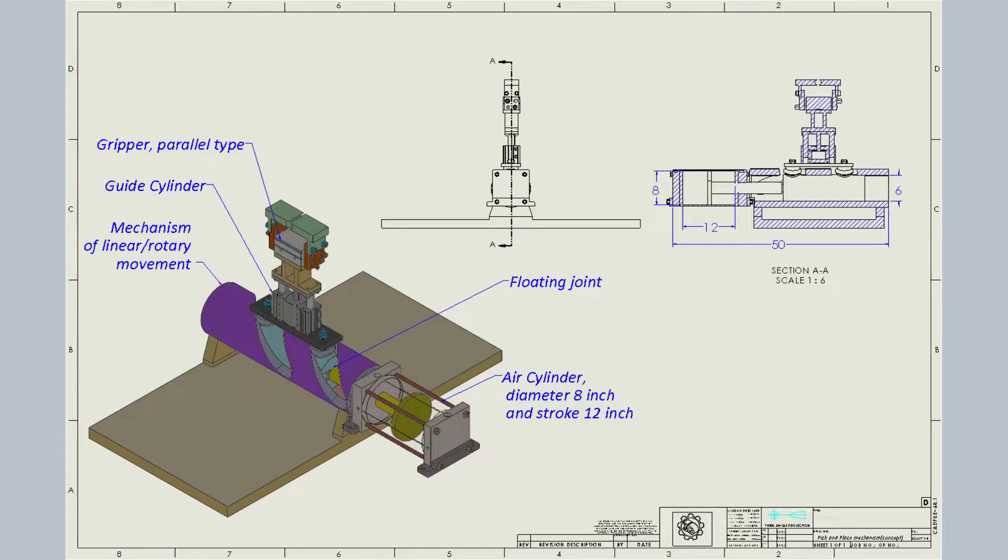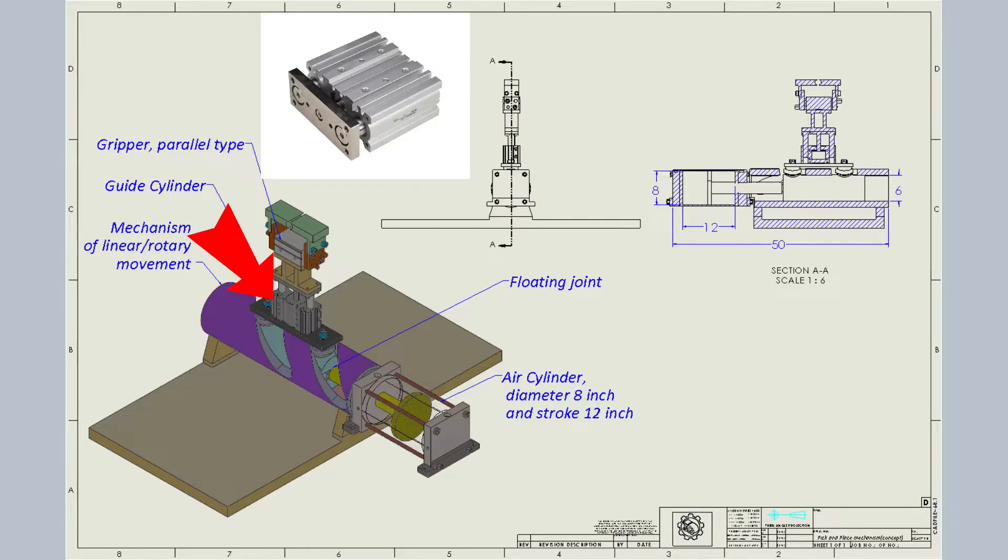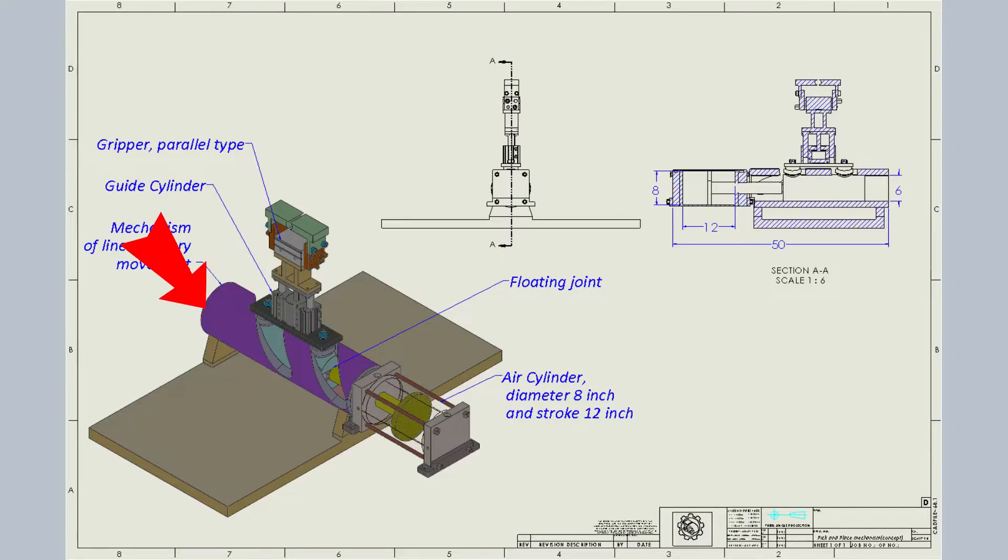For this mechanism I used gripper parallel type, guide cylinder, mechanism of linear and rotary movement with two profiles and two followers.